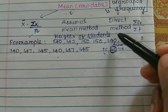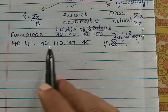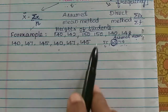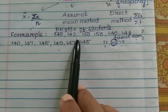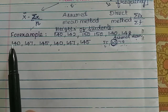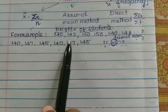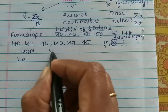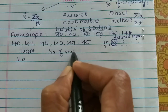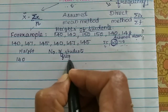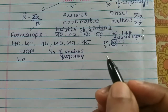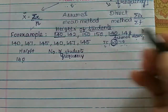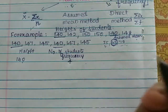Now for the direct method, here is an example: height of students. The values are 140, 142, 145, 147, 148, 150 cm. We count how many students are at each height — that is the frequency. For 140, counting 1, 2, 3, 4 — there are 4 students. That is the frequency of 140.